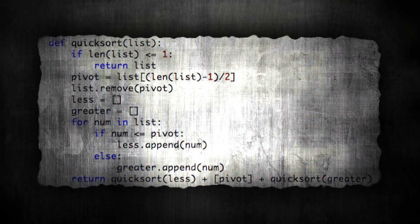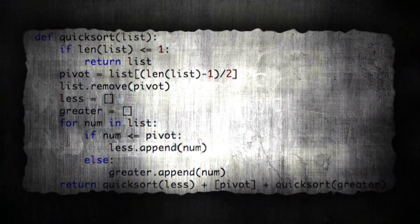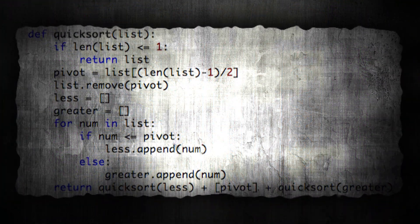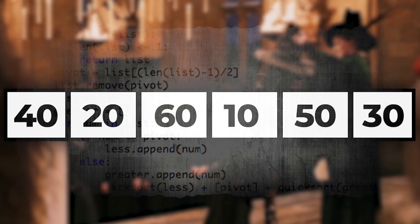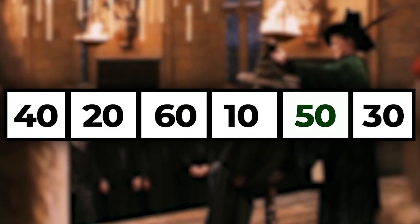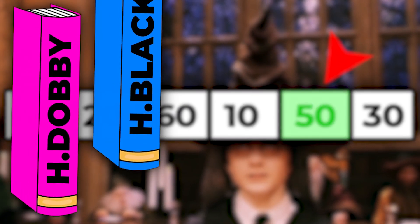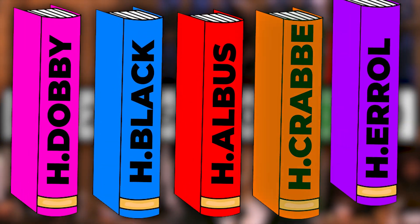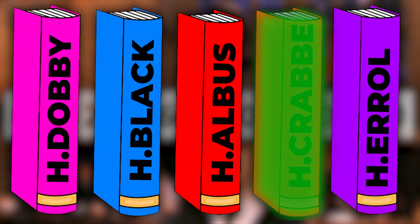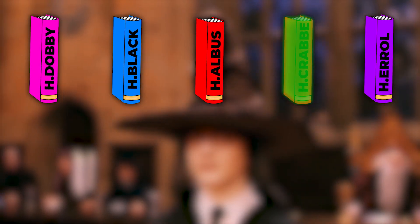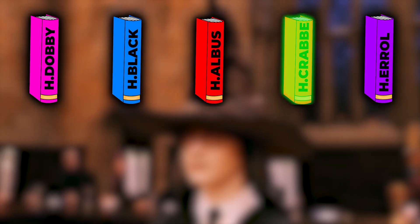Quick sort is like casting a powerful spell that sorts items in a fraction of the time. It works by selecting a pivot item from the array — in this case a book from the pile. Then it partitions the remaining items into two groups.